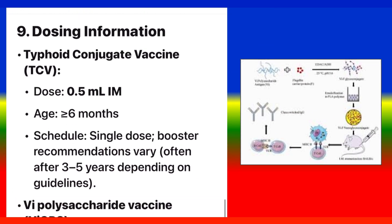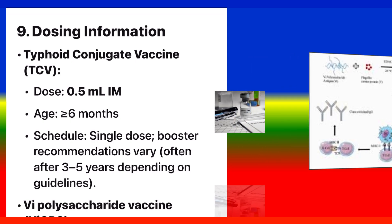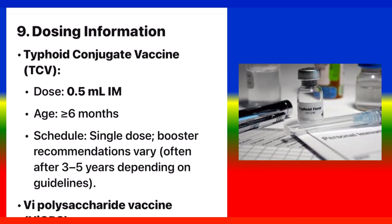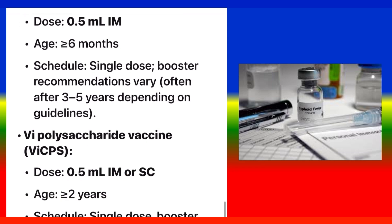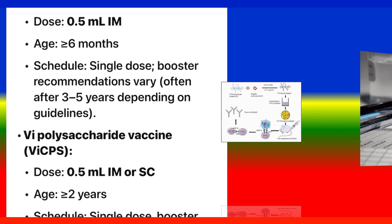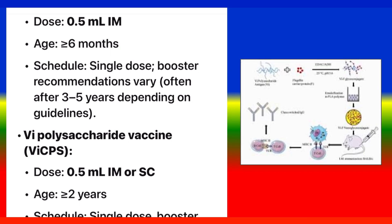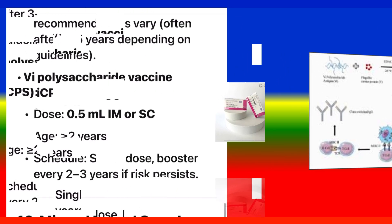Dosing Information: Typhoid Conjugate Vaccine (TCV) — dose 0.5 mL IM, age 6 months and older, single dose; booster recommendations vary, often after 3 to 5 years depending on guidelines. Vi Polysaccharide Vaccine (VICPS) — dose 0.5 mL IM or SC, age 2 years and older, single dose; booster every 2 to 3 years if risk persists.